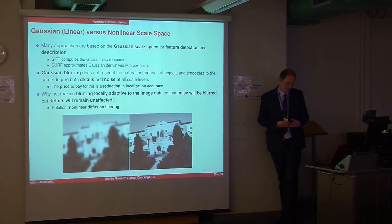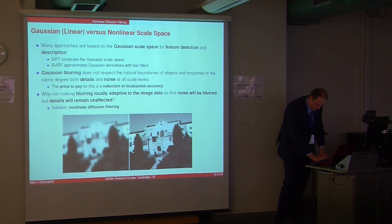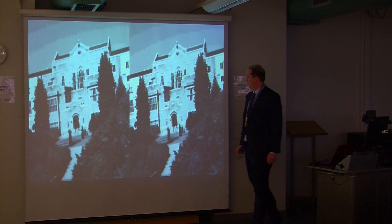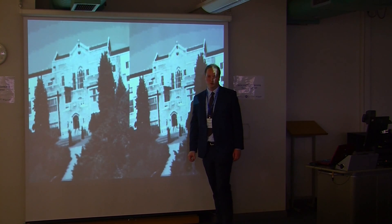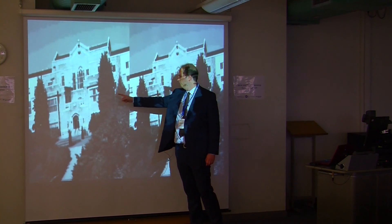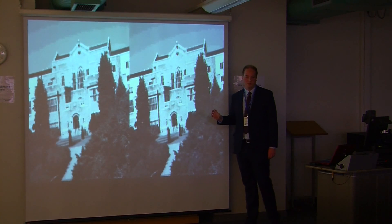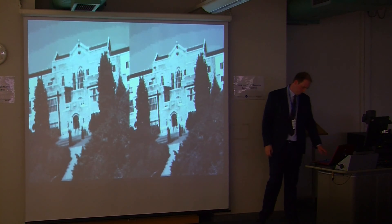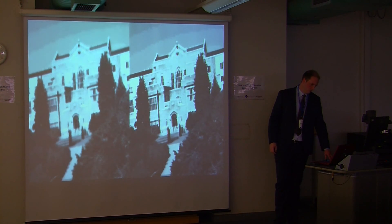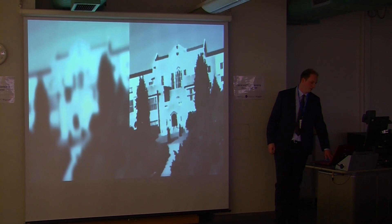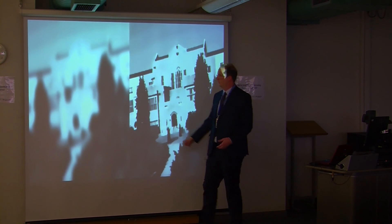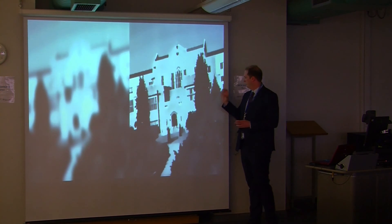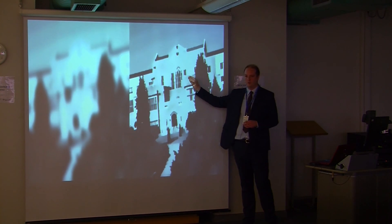Why not make blurring locally adapted to the image data, so noise is smoothed but boundaries are preserved? The solution is non-linear diffusion filtering. Here is one image from the UBC sequence: on the left we see evolution through Gaussian scale space, and on the right through non-linear diffusion. As time increases, in the Gaussian scale space details and noise are completely smoothed, while in non-linear diffusion the important boundaries are preserved.